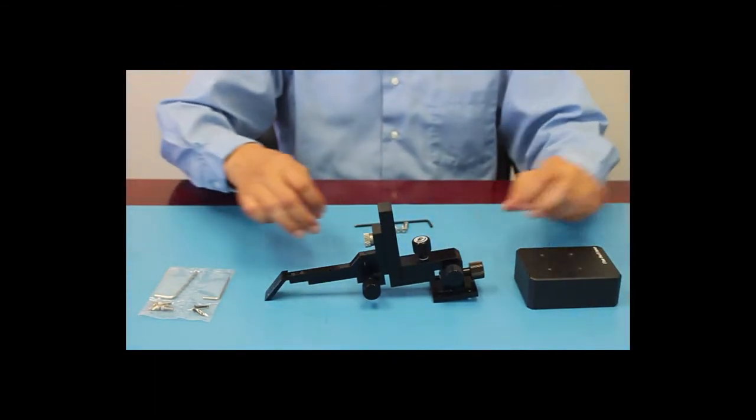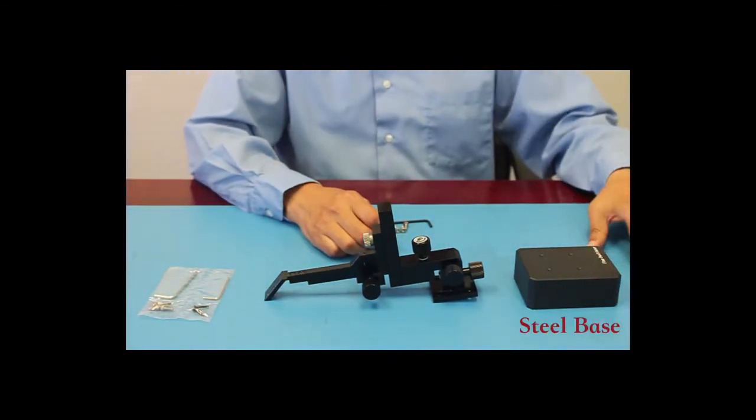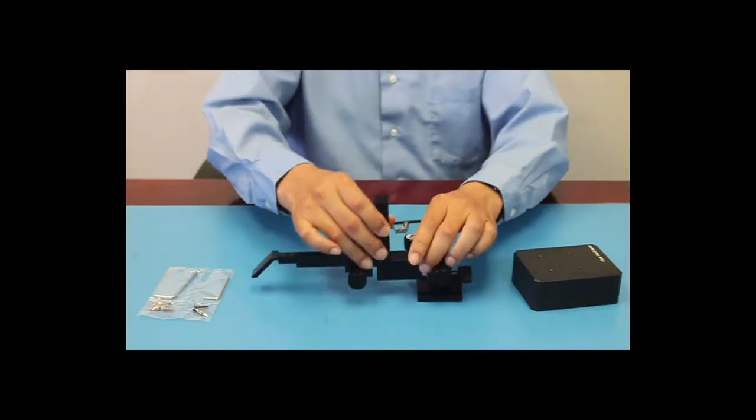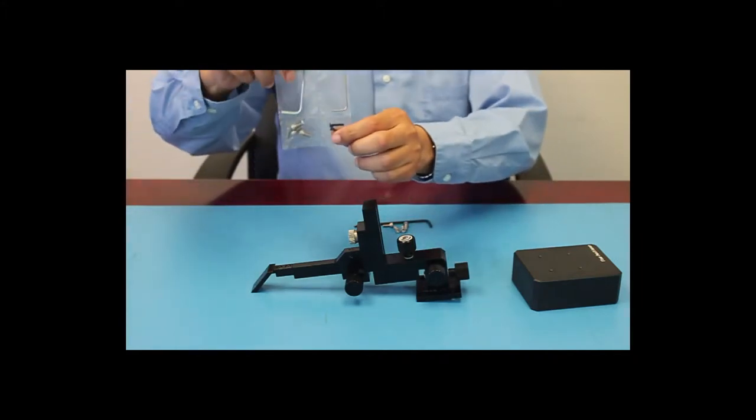Out of the box, you'll have a steel base, a probe arm with XYZ stage, and hex key with screws.